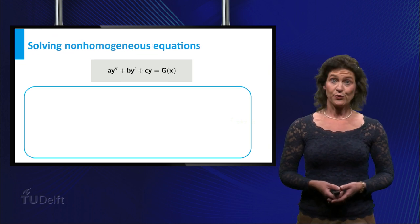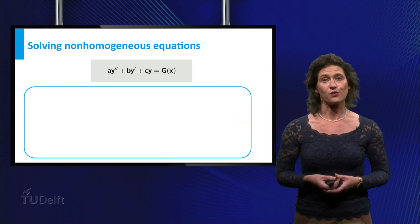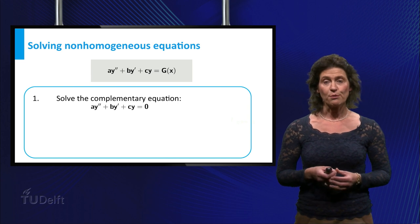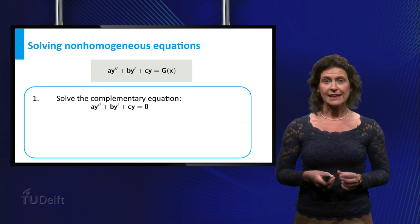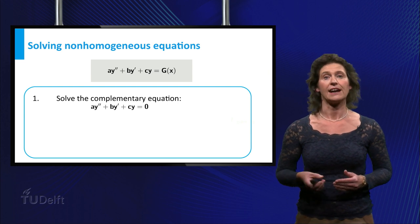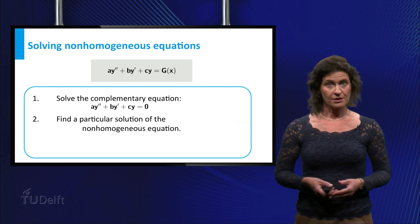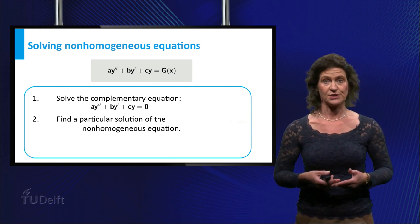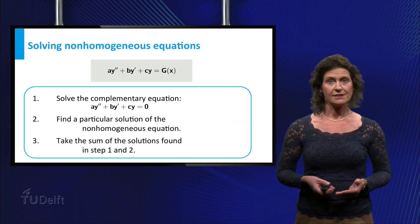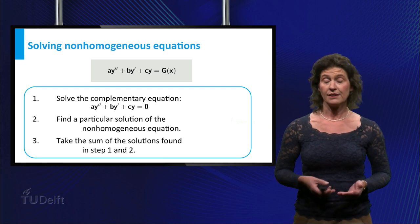But to find the general solution of a non-homogeneous equation, the procedure is as follows. Step 1, solve the complementary equation, that is the associated homogeneous equation with the right-hand side equal to 0. Step 2, find a particular solution of the non-homogeneous equation. And step 3, take the sum of the solutions found in step 1 and 2.